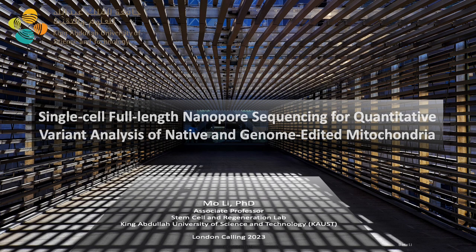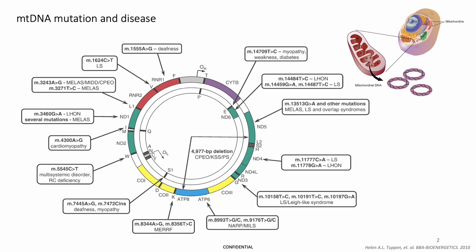I'd like to thank Dr. Nanopur for the opportunity to share our work. Human mitochondria has a circular genome of 16.5 kb. mtDNA mutations can cause mitochondrial diseases that affect 1 in 5,000 humans.